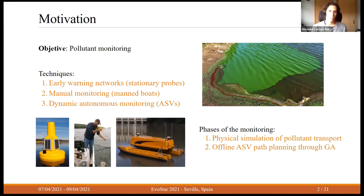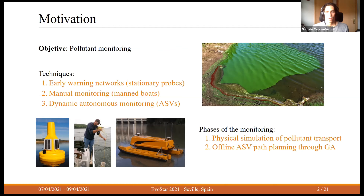The motivation behind this project is to be able to monitor pollutants that may appear in bodies of water, such as reservoirs or lakes, that may be harmful for either consumption or the wildlife that lives in them. At the moment, there are three techniques being used mainly. The first is early warning networks, which consist of stationary probes that can take measurements periodically, but only where they are located.